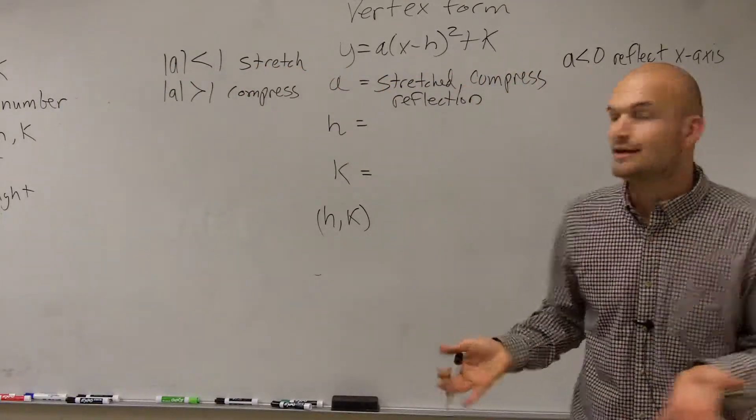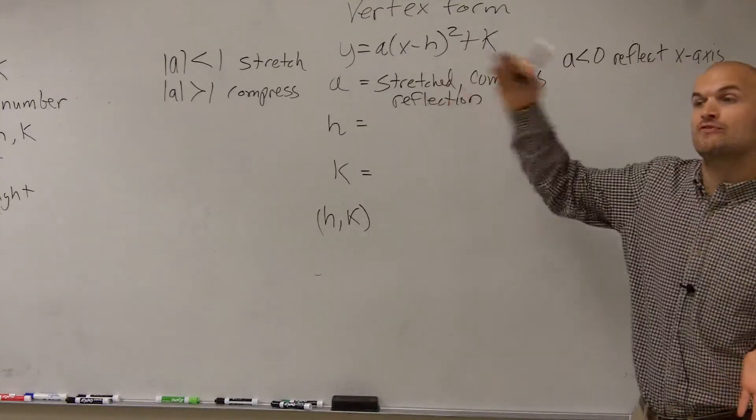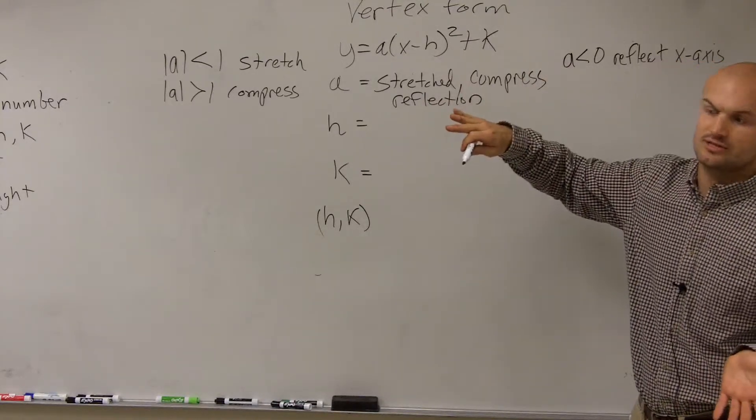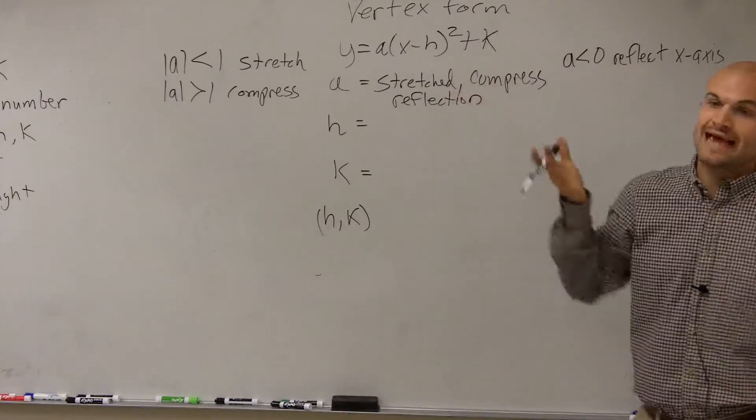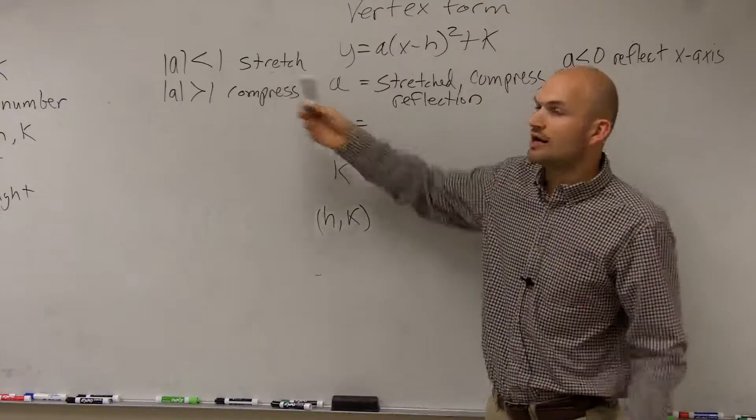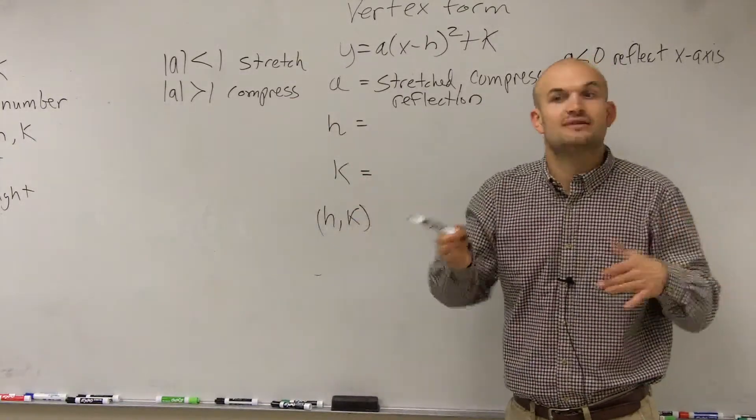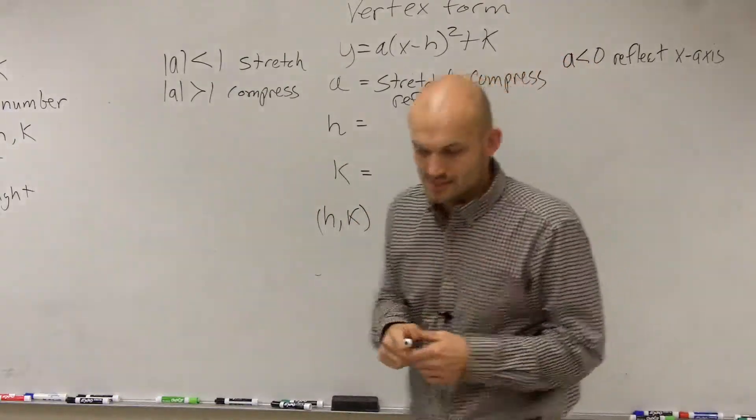And if the absolute value of a is greater than 1, then our graph is compressed horizontally. All right? So those are important things. So what you're going to do is you're going to look at a, and if it's less than 0, that means it's negative, then that means you're going to reflect it over the x-axis. Cody, that's important. Yeah. Then you look at the absolute value of it. So forget if it's positive or negative. If it's less than 1, that means the graph is stretched horizontally. And if it's greater than 1, then it means, that means it's going to be compressed horizontally.